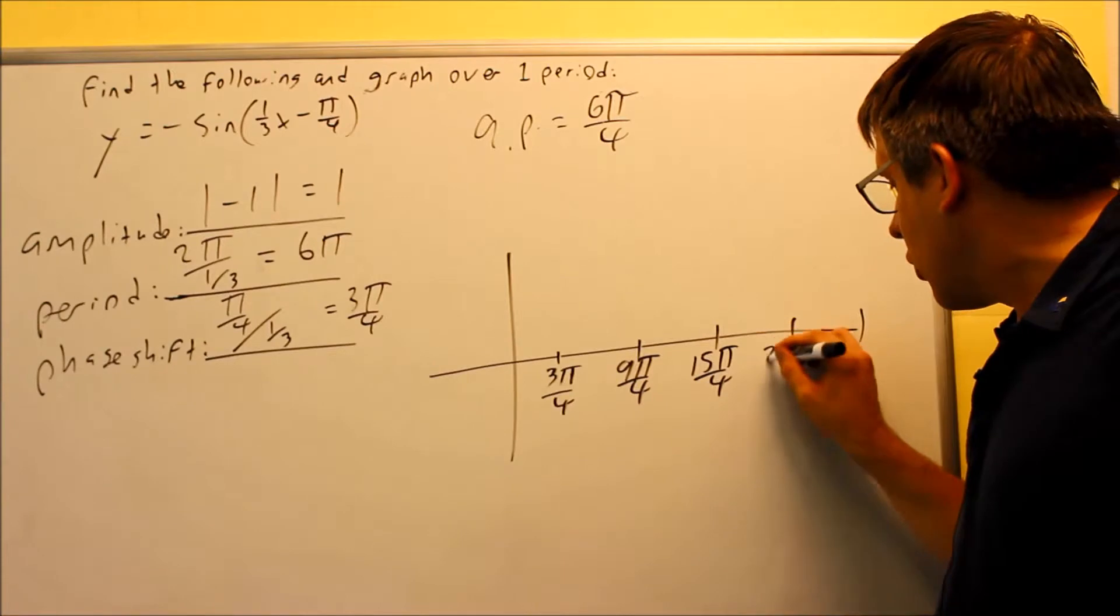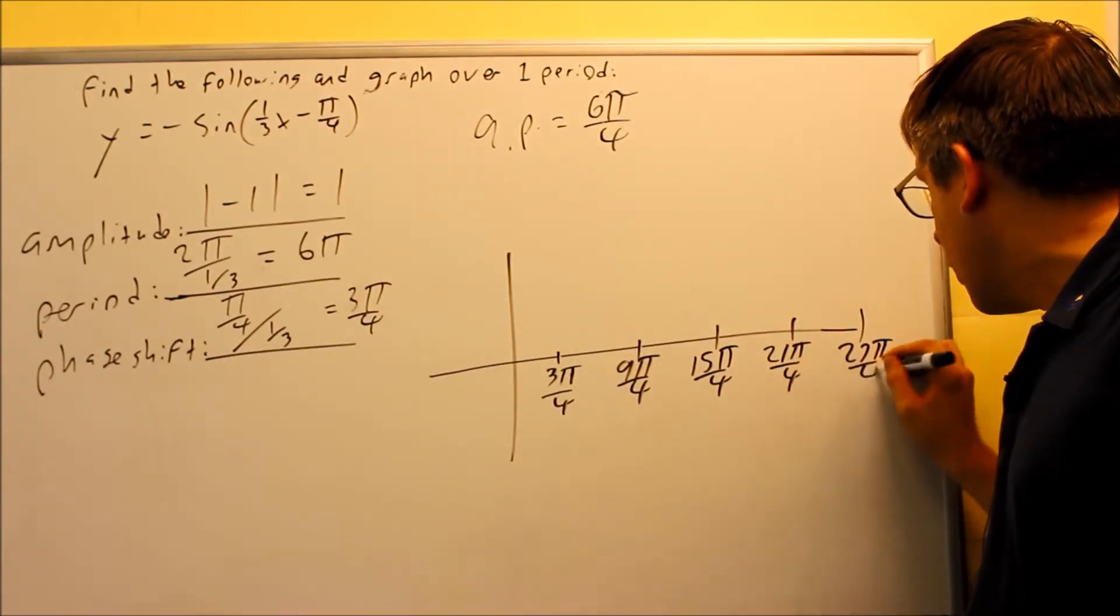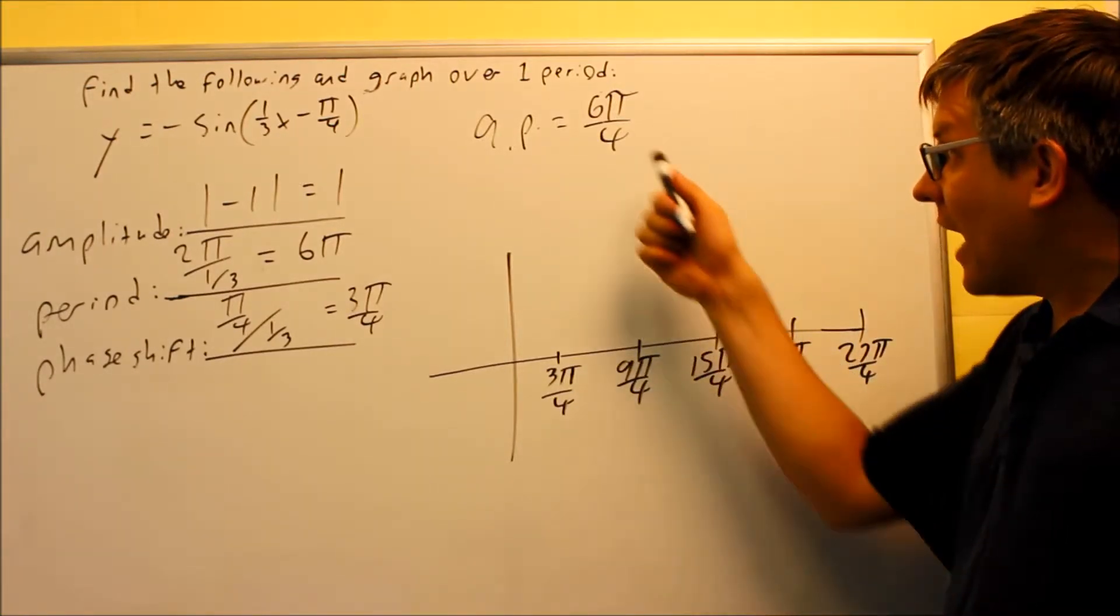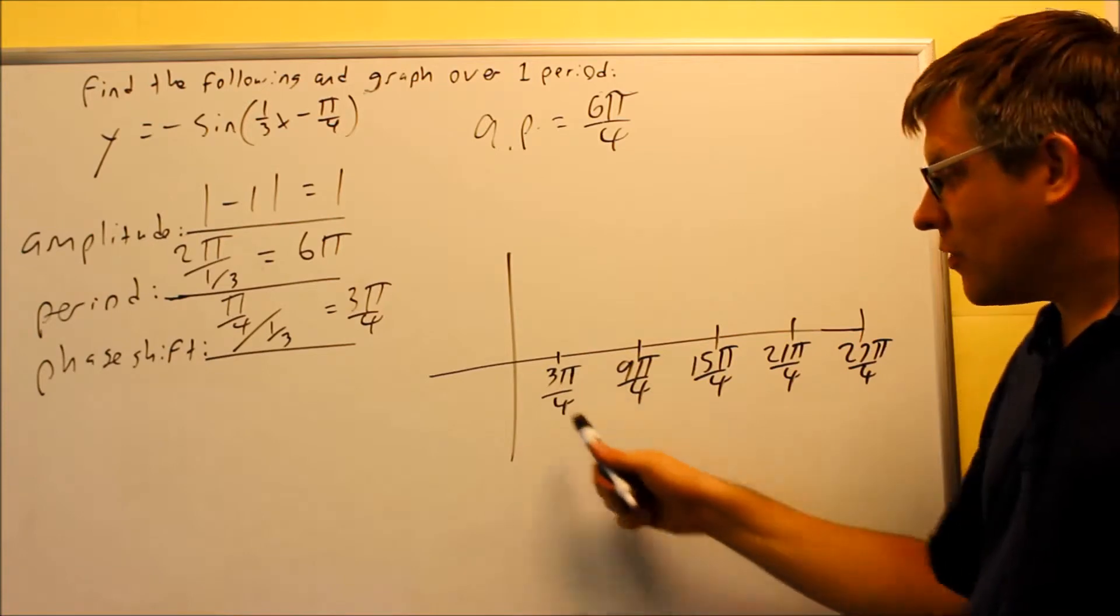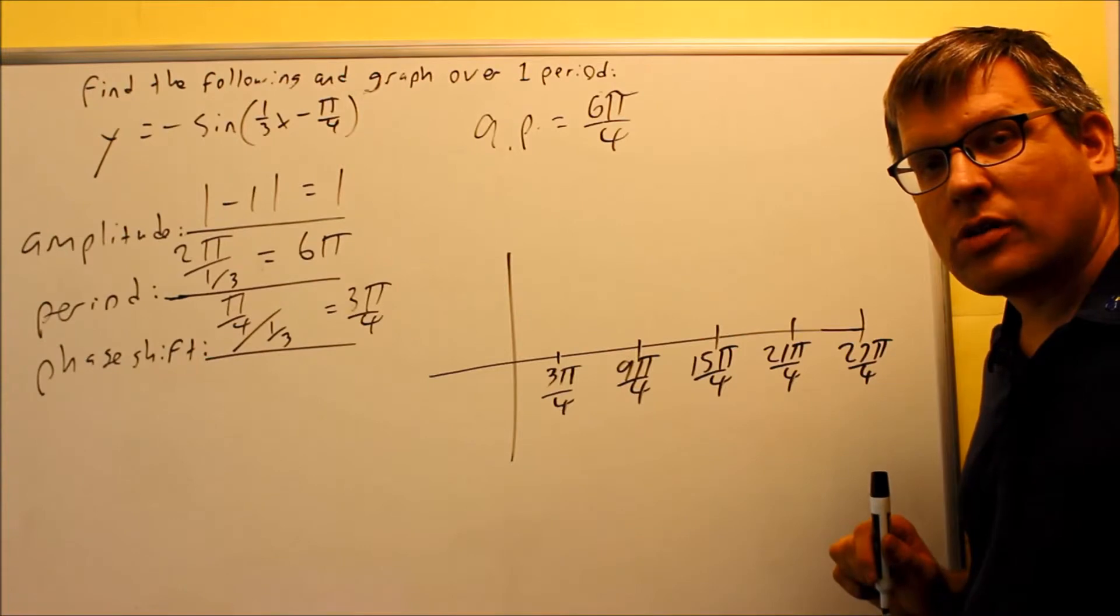Add another 6, 21π/4. Add another 6, 27π/4. So that finishes all my key points. All I'm doing is adding the quarter point to my phase shift to get this one, and I just keep adding the quarter point all the way across to get the rest of the key points.